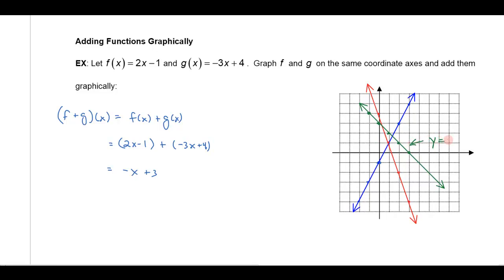So this is y equals negative x plus 3. Negative 1x is your slope, negative x plus 3. And notice that that is the same thing that I got over here when I added them together algebraically. Okay, so we're just showing the relationship between adding a function graphically and how you would do the same thing adding it algebraically here and adding it graphically over here.